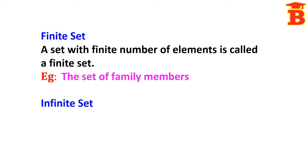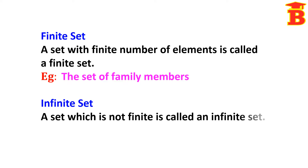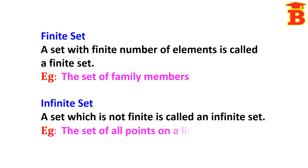Next, infinite set. A set which is not finite is called an infinite set. Infinite means we are not able to count all the elements in the set. For example, the set of all points on a line — in a line we have so many points and we are not able to count all of them, so it is an infinite set.